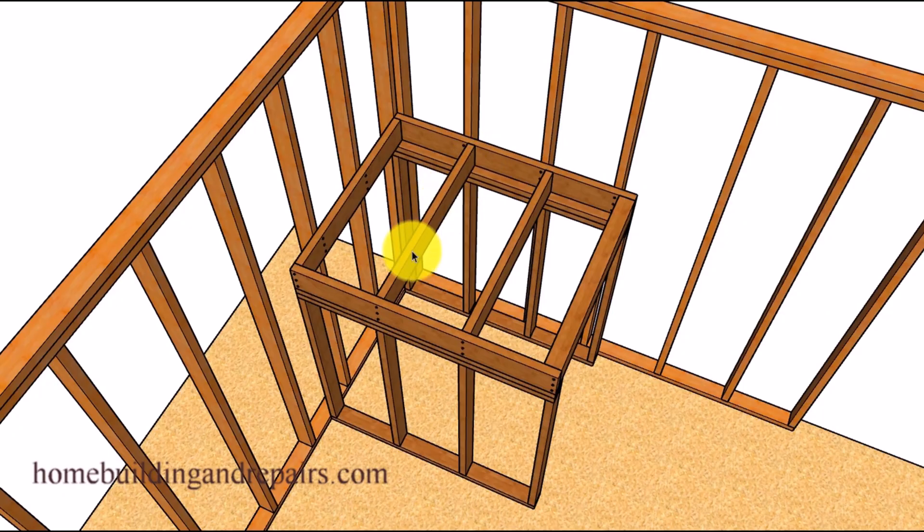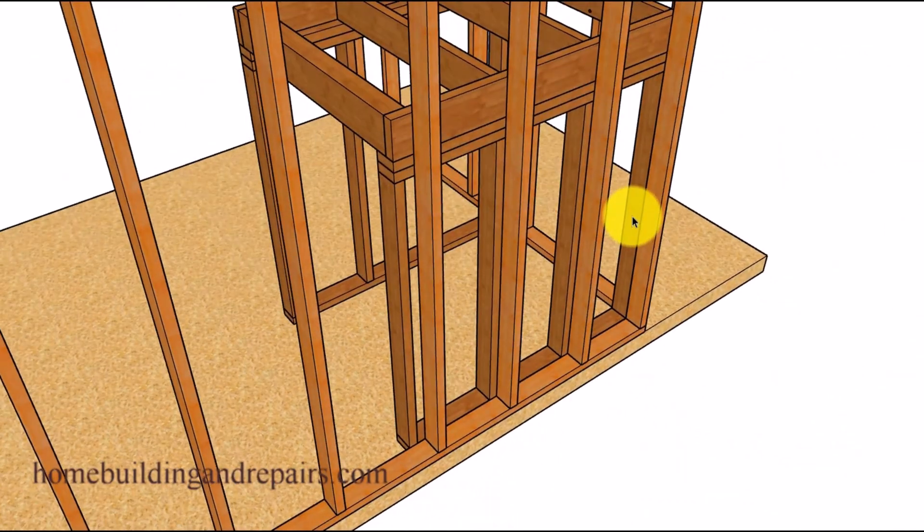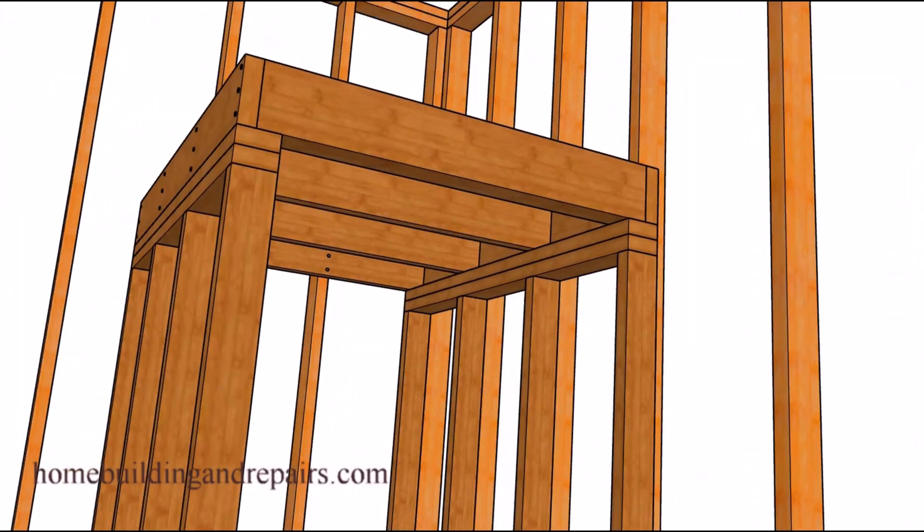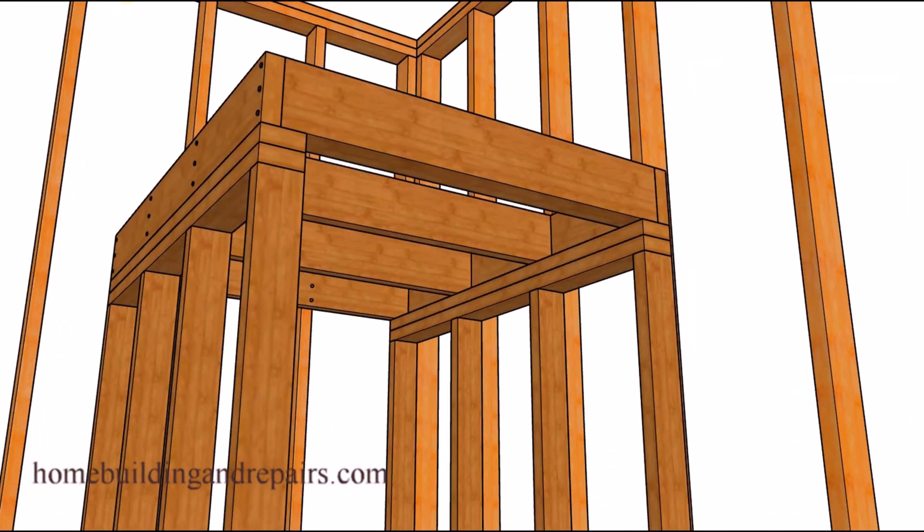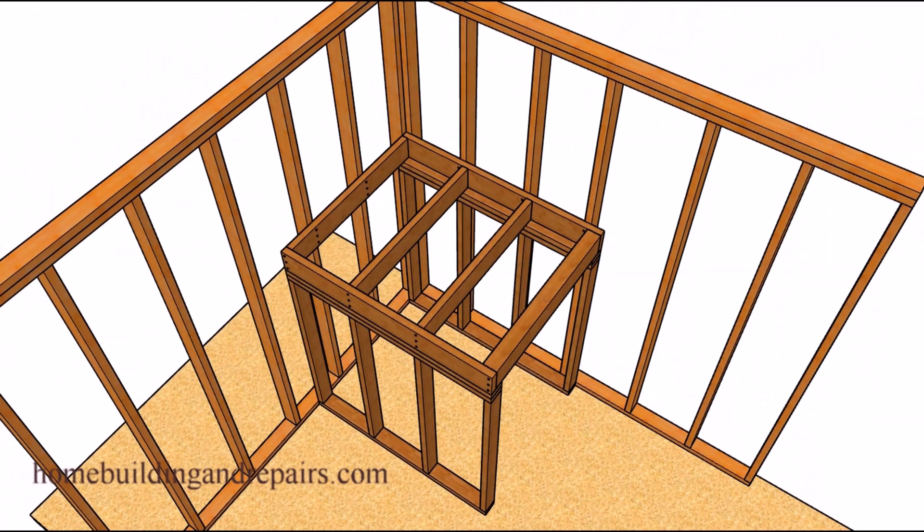Another option would be to frame the landing on top of another wall. So we would be using two walls here. View from the other side. And this would provide you with a sturdy landing. No doubt about it. Because we don't have to worry about any hangers loosening up over time.